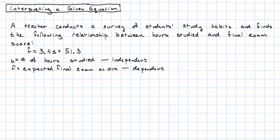For example, suppose a teacher conducts a survey of students' study habits and finds the following relationship between hours studied and final exam score. We're given the equation f equals 3.4s plus 51.3. The number of hours studied is our independent variable. The final exam scores, or the expected final exam scores, are our dependent variable.